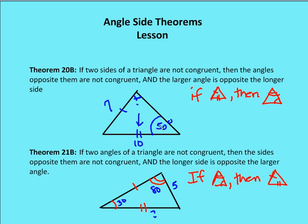Theorem 21b: if two angles of a triangle are not congruent, then the sides opposite them are not congruent — taking theorem 21 and applying it to incongruent angles. Here, one angle is 30 degrees and another is 80 degrees. The side opposite the 30-degree angle is 5 units, and the side opposite the 80-degree angle must be longer than 5 units, because 80 degrees is larger than 30 degrees.